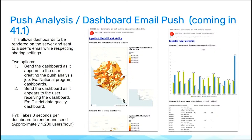There are two options here. The first one is you can send a dashboard based upon how it appears to the user who created the push analysis job. So whoever configured this — as the dashboard appears to them — that's how the person receiving the dashboard in their email will see it. For example, I am a national system administrator with access to the national malaria control dashboard, and I want everyone to see the high-level key impact indicators for malaria at national level. I configure push analysis so the user sees what I see, and when they receive the email, they'll see exactly how the dashboard appears to me.